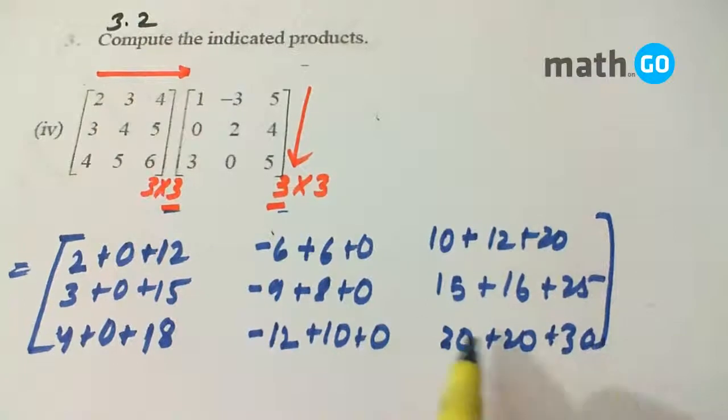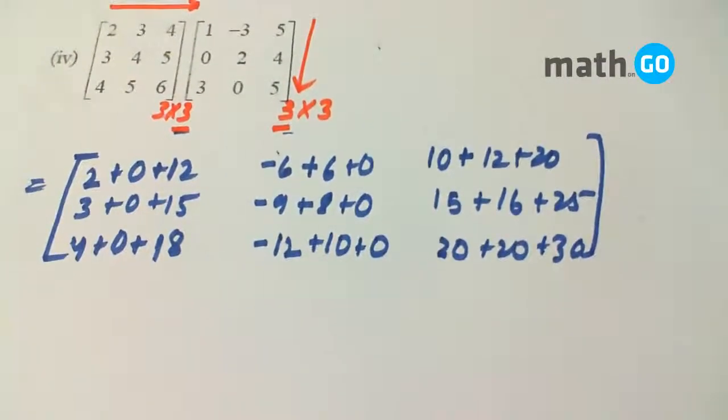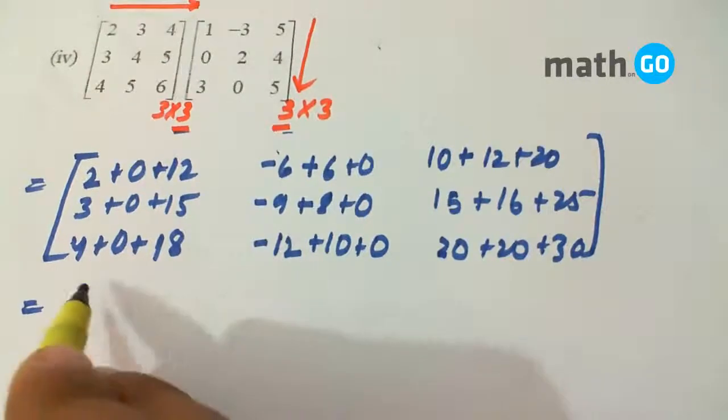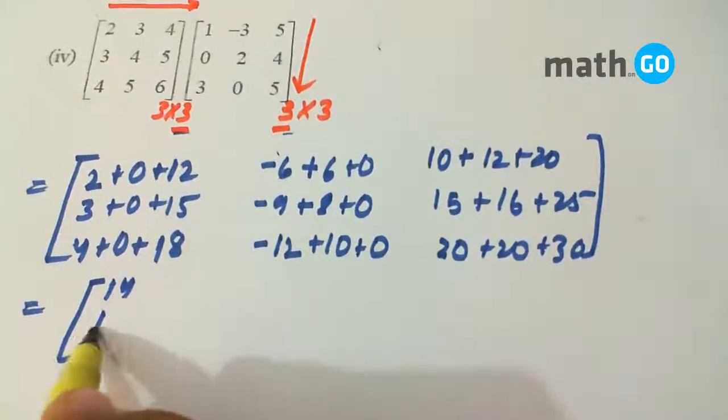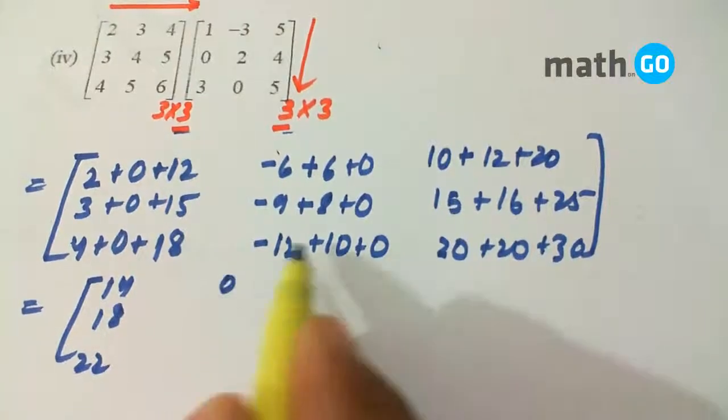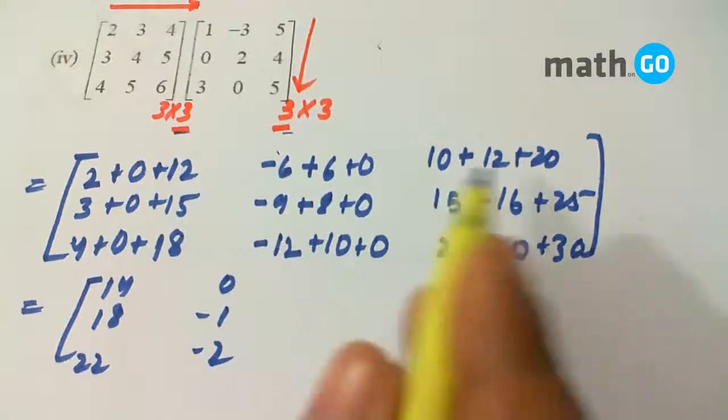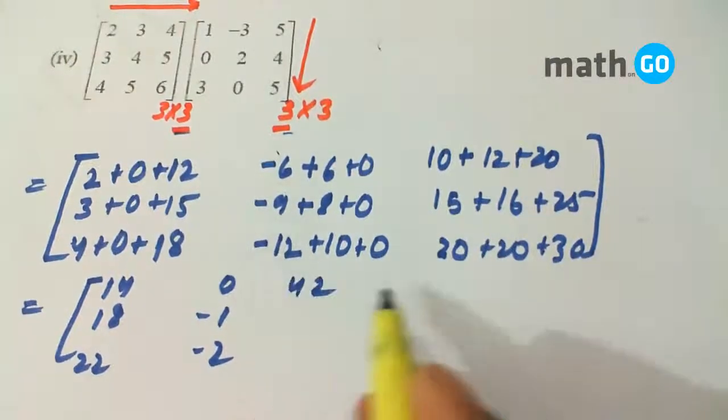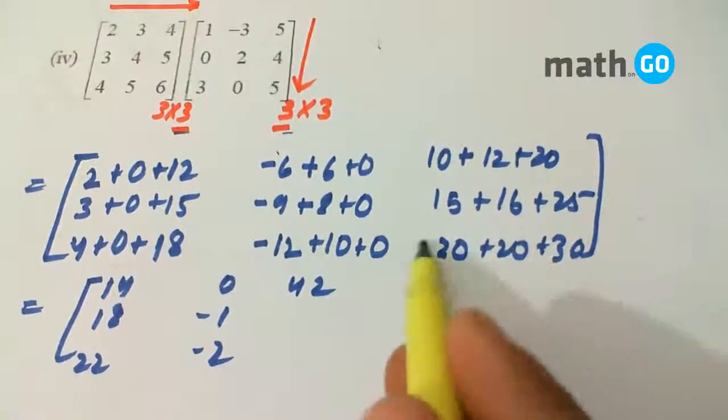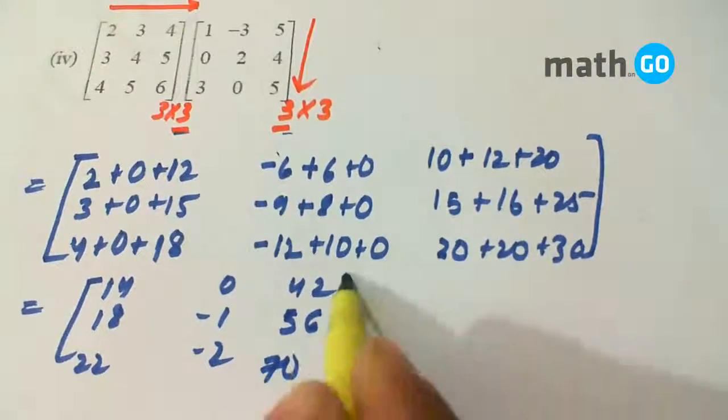So this is our matrix which can simply be written as 14, 18, 22, 0, minus 1, minus 2 and 42, 56 and 70.